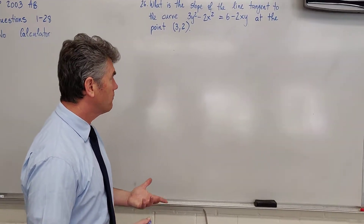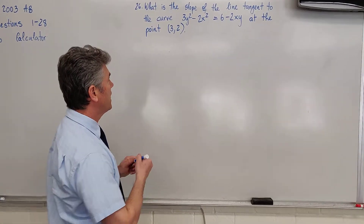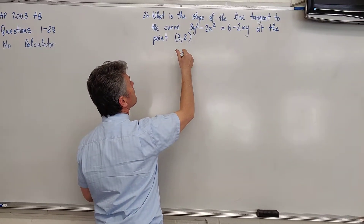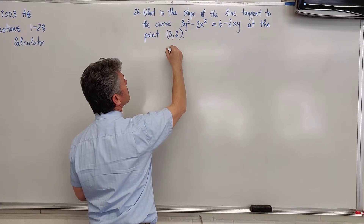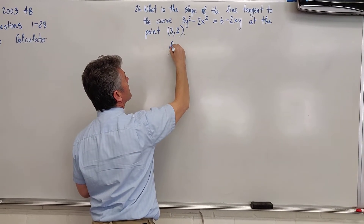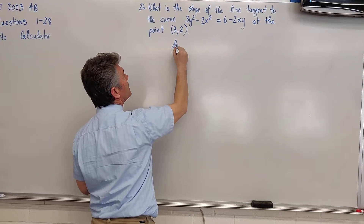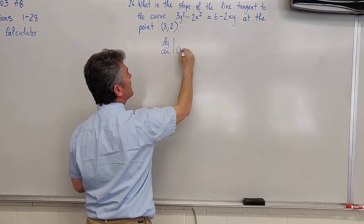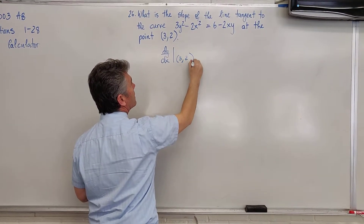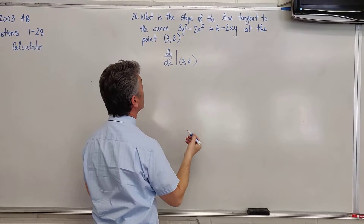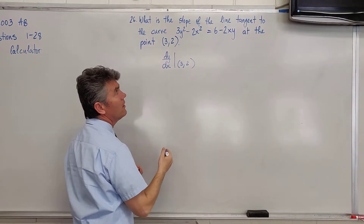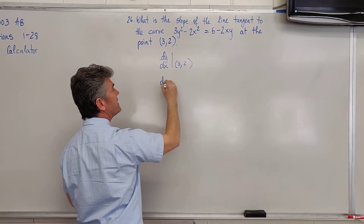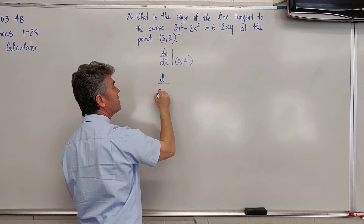The question is asking us to find dy/dx at the point (3, 2). And like I said, what you need to do is use implicit differentiation.